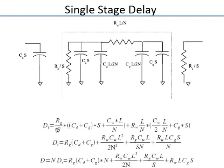Applying the Elmore delay formula to one segment: delay = (Rg/s)(CD·s + CG·s + Cw·L/n) + (Rw·L/n)(Cw·L/(2n) + CG·s). Expanding the brackets, the overall delay is n times the segment delay, giving terms: Rg(CD + CG)·n — representing each inverter driving its own parasitic plus the next gate's capacitance — plus wire resistance times gate capacitance and cross-terms.